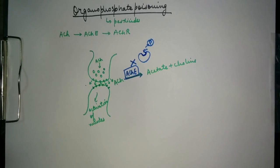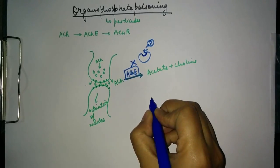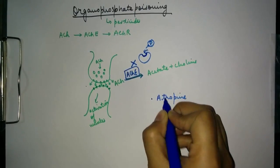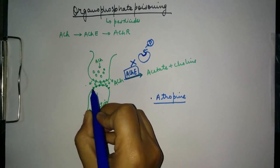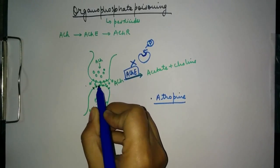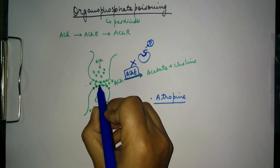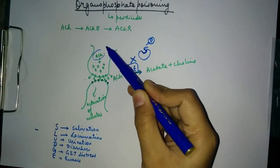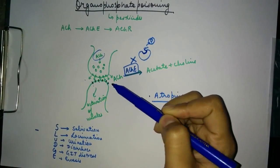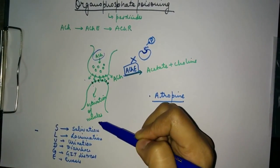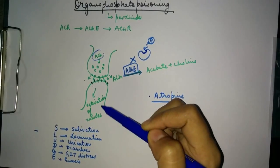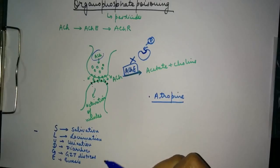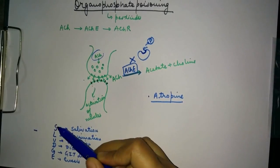One important point is that the organophosphate reaction is irreversible — it cannot be reversed. However, a therapy is available in which we use atropine. Atropine works by competitively binding to the acetylcholine receptors, preventing acetylcholine molecules from binding to those receptors, and thereby decreasing the activation of the muscles.